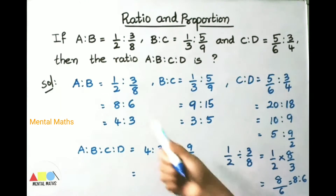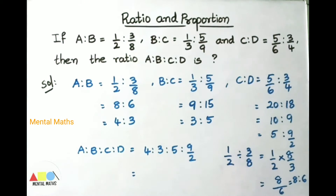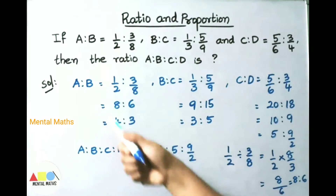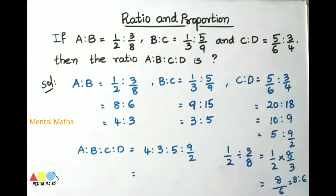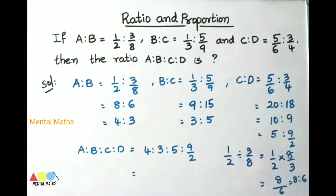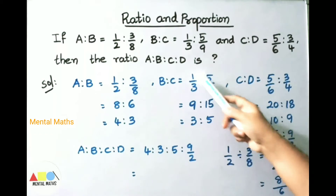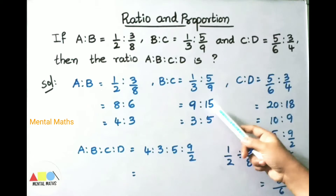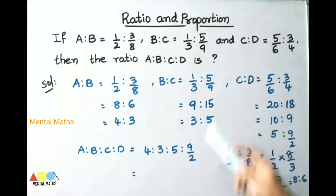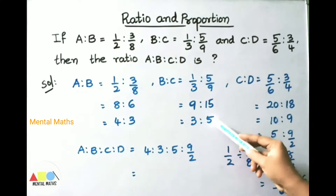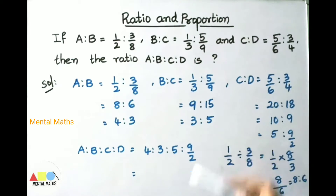Dividing both terms by 2, using the 2 times table: 2 fours are 8, 2 threes are 6. Therefore A is to B is 4 is to 3. Next, B is to C is 1/3 is to 5/9. By cross multiplication: 1 times 9 is 9, 3 times 5 is 15. Dividing both terms by 3: 3 threes are 9, 3 fives are 15. So B is to C is 3 is to 5.